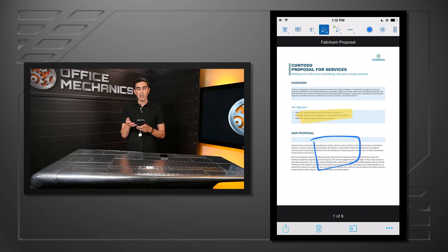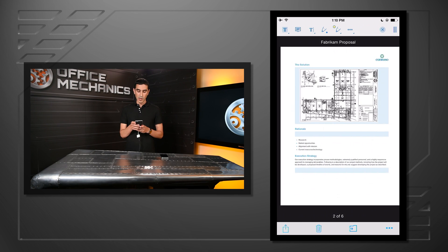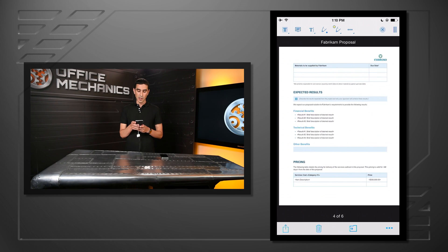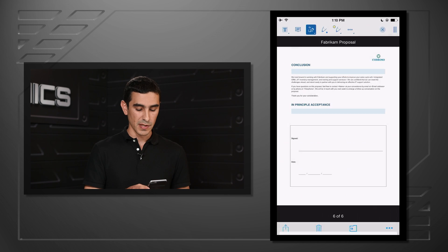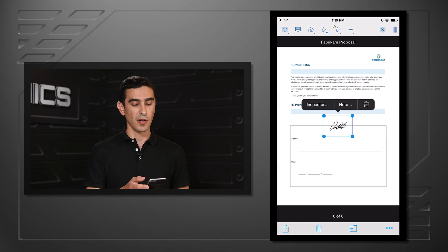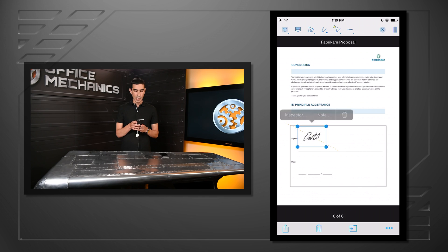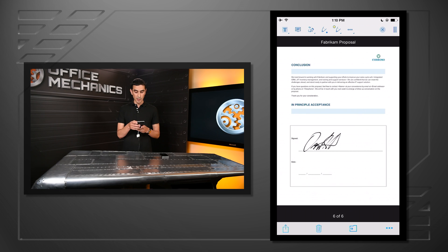One of the features that I really wanted to show you was the ability to sign a document. In this case, this is a contract. So what I want to do is go to the last page, where you can see there's a signature field. I'll bring up the signature and select the signature that I've already entered into the application. As you can see, I can move it anywhere I want on the page. I'm going to put it right here in the signature field, and then I'm going to hit back.